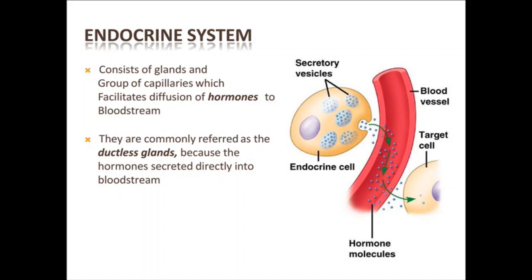The hormones will reach the target cell wherever the blood goes. Inside the endocrine cells, secretory vesicles burst and release their product — hormones — into the blood vessels. The blood flow carries these hormones to the target cell. This is the endocrine system. The endocrine system is the collection of glands that produce hormones that regulate metabolism, growth and development, tissue function, sexual function, reproduction, sleep, and mood, among other things.